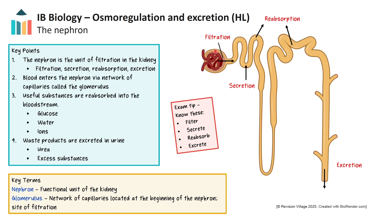Filtration begins when blood enters the nephron through a network of capillaries. As blood passes through the capillary bed called the glomerulus, small molecules like water, salts, glucose and urea are filtered out. Useful substances such as glucose, most water and some ions are reabsorbed back into the bloodstream. What's left behind — mainly waste products and excess substances — is excreted from the nephron and eventually becomes urine. This basic pattern — filter, secrete, reabsorb, excrete — forms the foundation for all the specific structures we'll cover next.